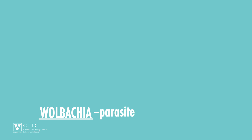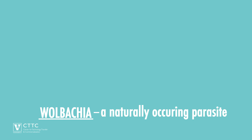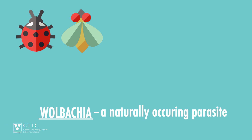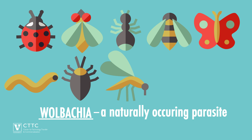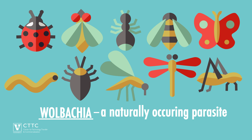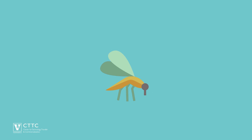Wolbachia is a naturally occurring parasite and already infects more than 40% of all insects worldwide. When it infects insects like mosquitoes, it affects them in two different ways.